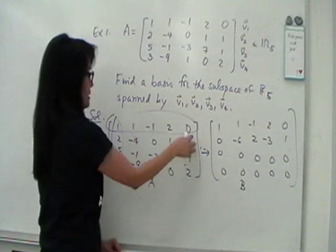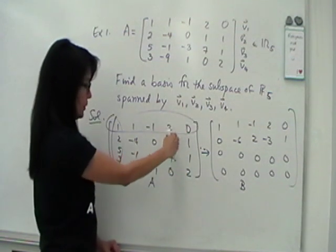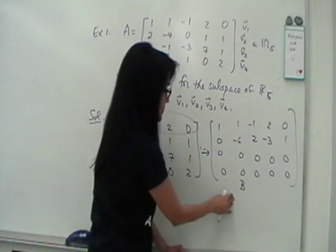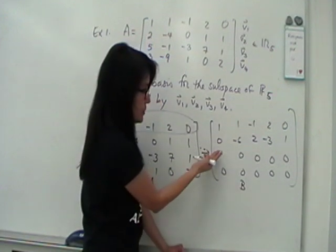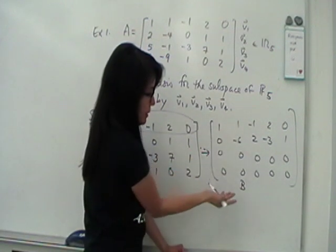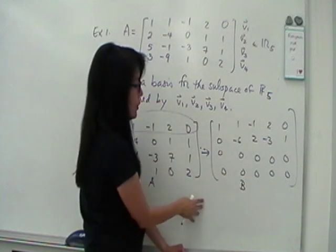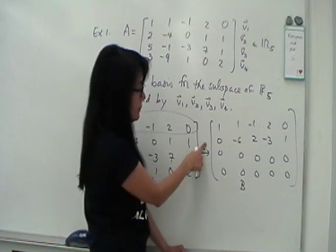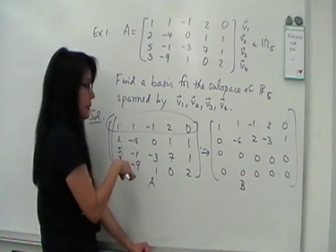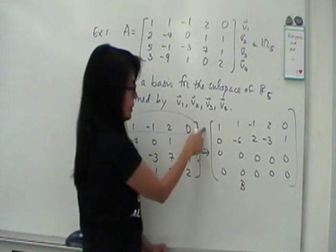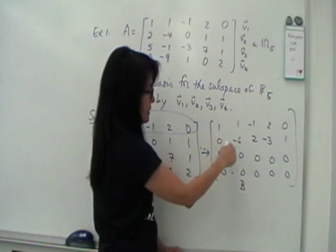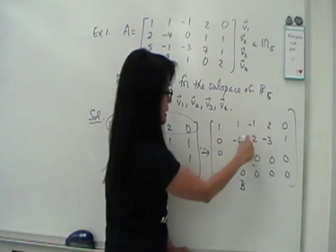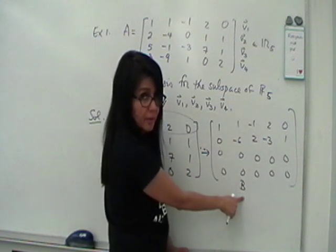The subspace of R5 spanned by these four vectors is really what you call the row space of A. And we were able to show that A is equivalent to this matrix B, which has two non-zero rows. You don't have to make that a 1, that's enough. This has these two non-zero rows. So according to the theorem, the subspace spanned by this, of course we have to consider the non-zero rows, it's exactly the same as the subspace spanned by this.